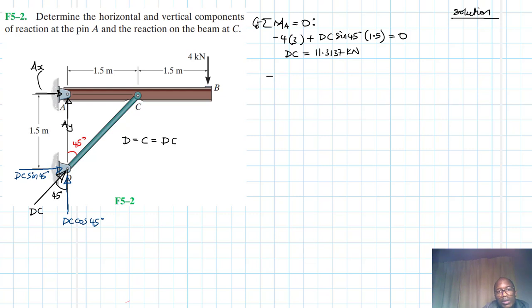Then we have summation of forces in the Y equal to zero going up in our reference. What do we have? We have AY minus four plus DC cos 45 equal to zero. We found DC already, so we can fit that in our equation.